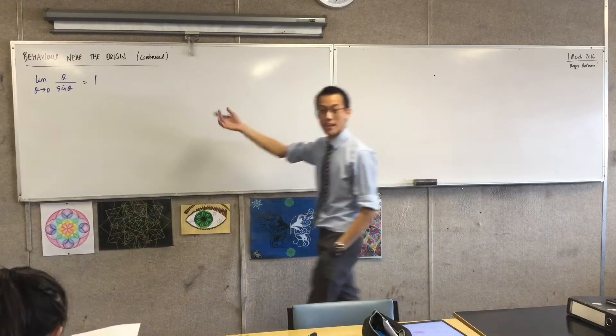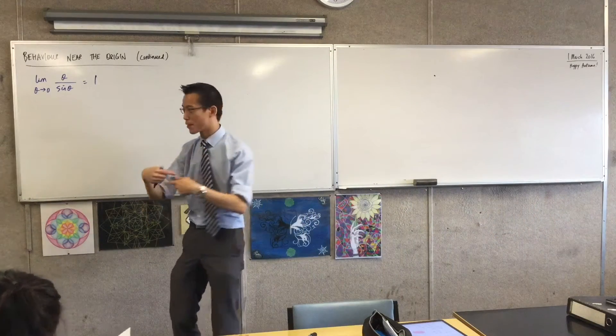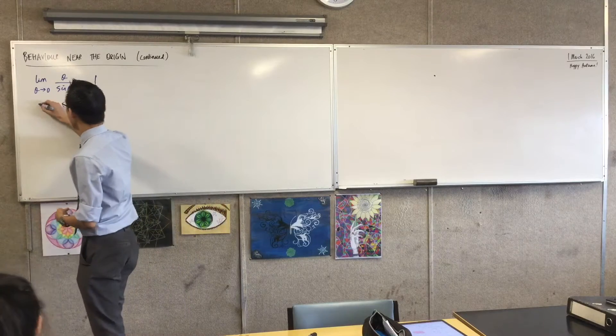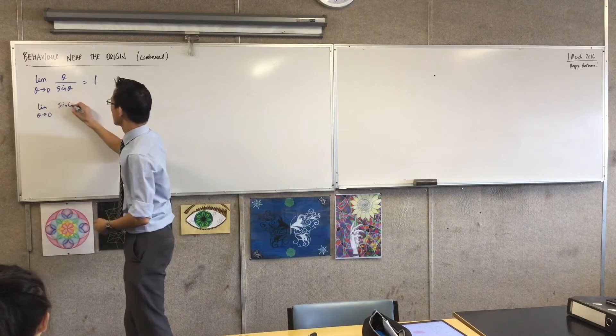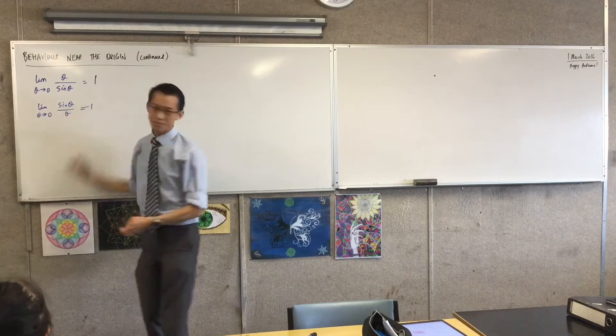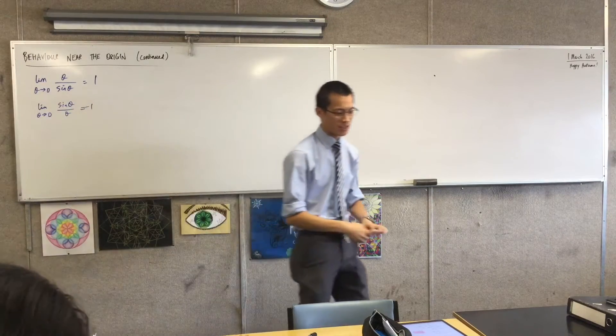Which means that 1 is a special number because it is its own reciprocal. So not only is this limit equal to 1, but the reciprocal gives us the same value. Because what is it?